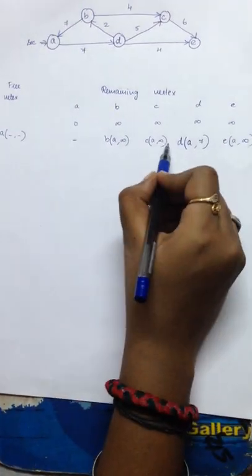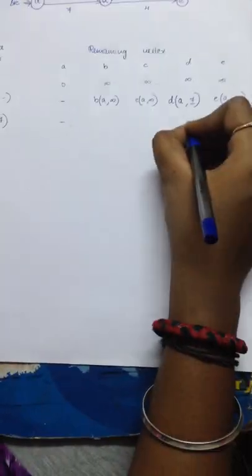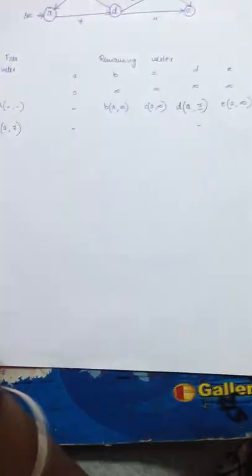Now, when we compare these 4 nodes, only 7 is lesser when compared to infinity. So now we can access node 7. A comma 7. From A, D, you cannot connect to A. From D to D, they cannot be connected.